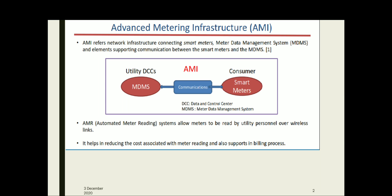These meters are fixed in various locations such as consumer, feeder, etc., to serve as a repository of record of all data. It should consist of a smart meter, a control system like the Head-End System, and a data management system. AMI refers to the network infrastructure connecting smart meters, meter data management systems, and elements supporting communication between smart meters and the meter data management system or MDMS.